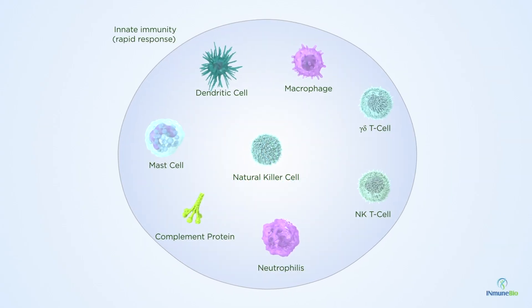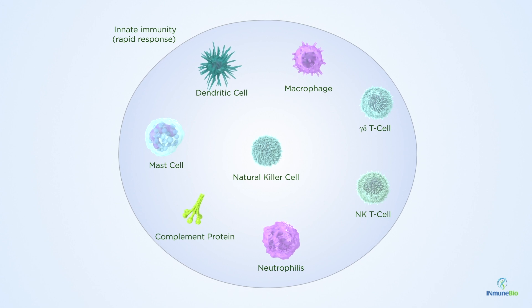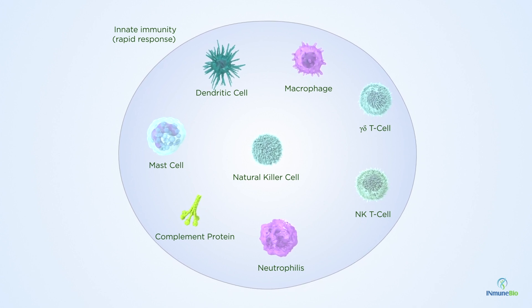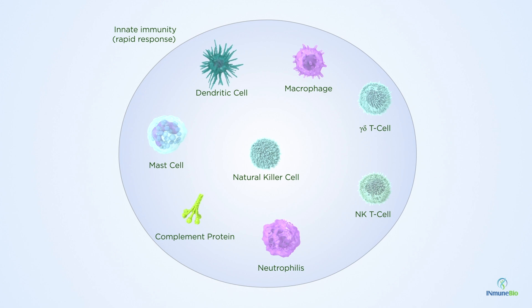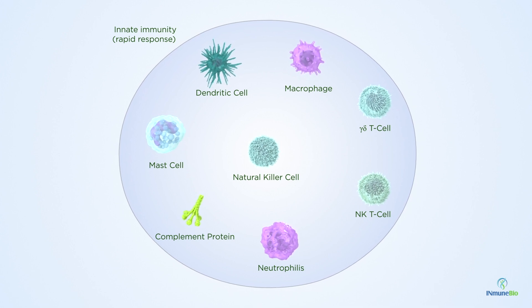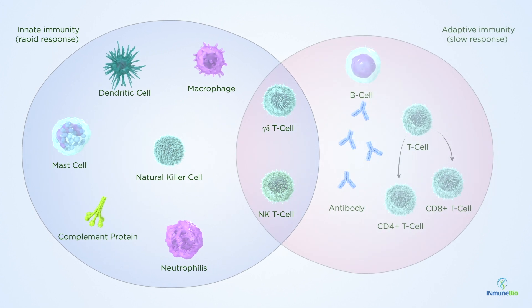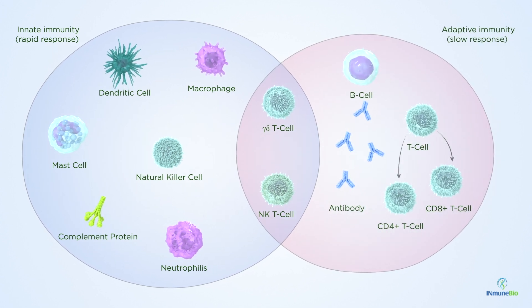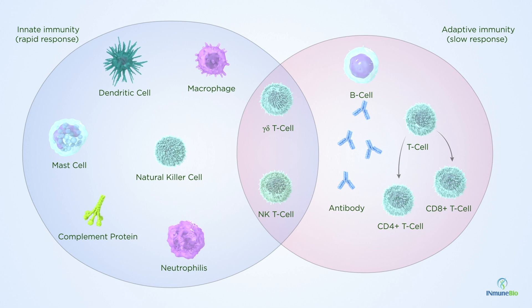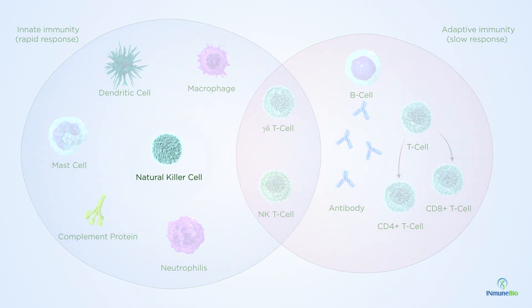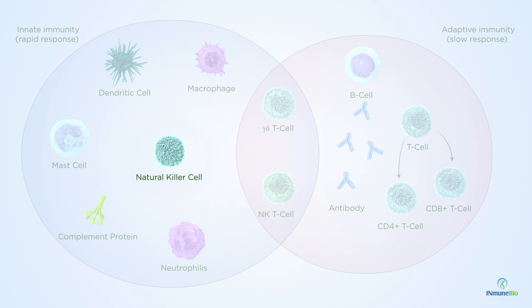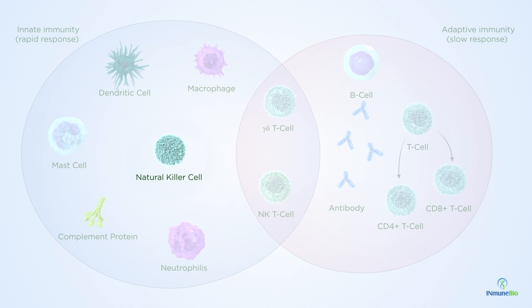Every day, innate immunity protects us from cancer and infectious diseases. It's essential for our existence and so fundamental that we share much of it with primitive animals such as sponges. Adaptive immunity evolved more recently but still requires an innate response to be initiated. Natural killer, or NK cells, are the major cytotoxic lymphocyte within our innate immune system.